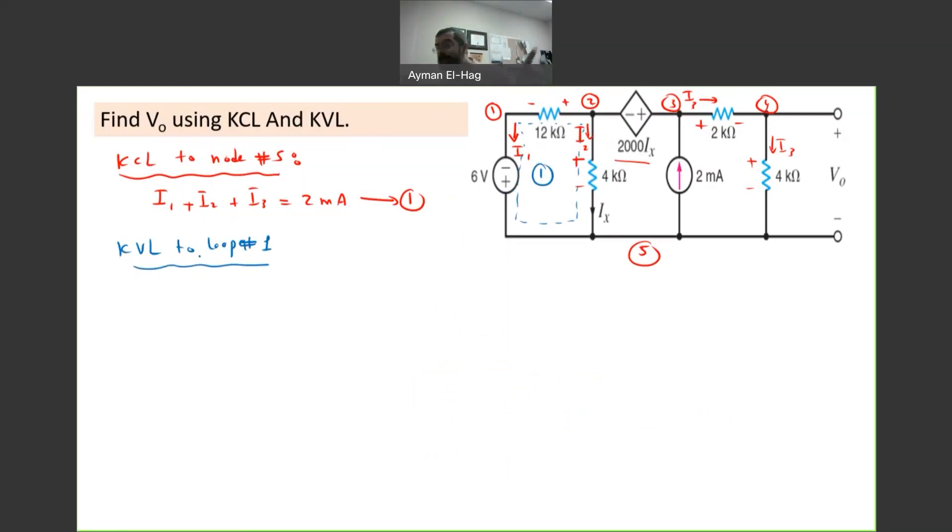KVL to loop number 1. In the loop you can start at any point and you can go counter clockwise or clockwise. I will start at node 1. The current in this direction, so the first thing I will say is minus. Minus 12K I1 plus 4K I2 plus 6 equal to 0. I can divide by 2 here, so we have minus 6K I1 plus 2K I2 equal to minus 3. This will be my second equation. So I have I1 and I2. Now I need one last equation.